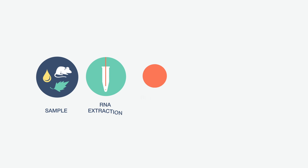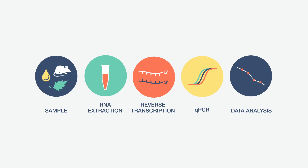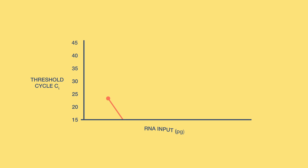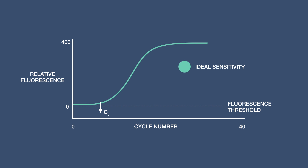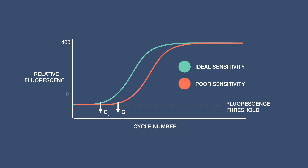The reverse transcription or cDNA synthesis step is one of the most common sources of variation in gene expression analysis by RT-qPCR. The sensitivity and dynamic range of qPCR are important for accurate quantitation of your starting RNA. Ideally, the CT of a qPCR should correlate well with the initial number of copies of the RNA target. In many cases this is not observed — for example, undetectable or higher than expected CT values could be a result of poor sensitivity.